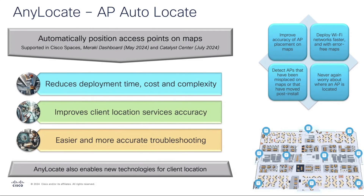We're also helping customers that have already positioned their APs on maps, but maybe not so accurately. It's human nature when you're dragging thousands of access points on a map that you get complacent — drag them into the middle of the room and think you're good. But all of that inaccuracy matters. If it's really on the outside wall and you drag it to the middle of the room, do that a couple hundred times, and your location accuracy is shot. We can help improve that with this feature.